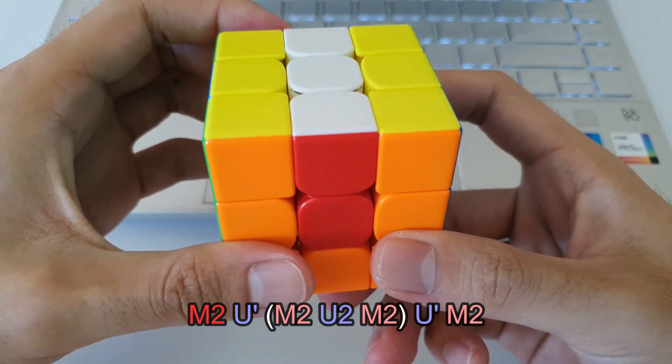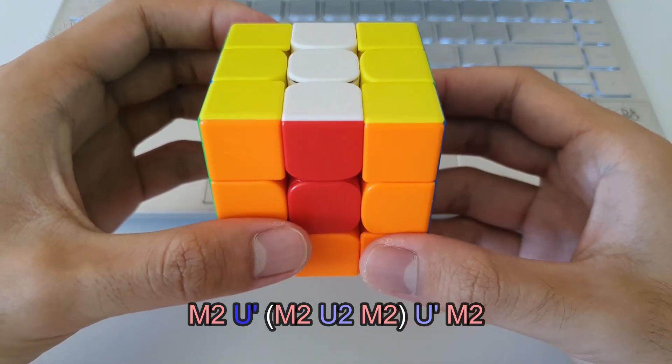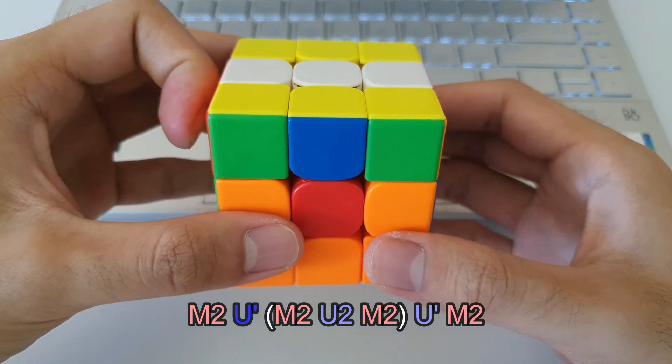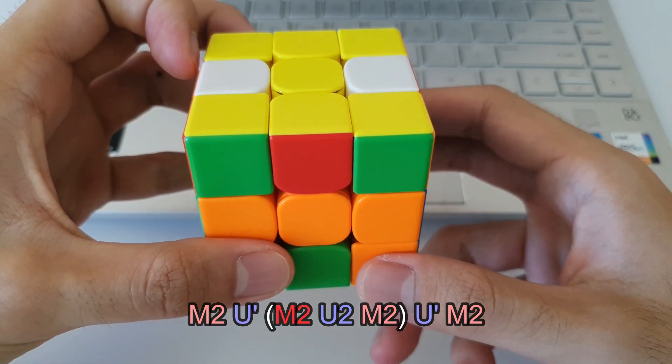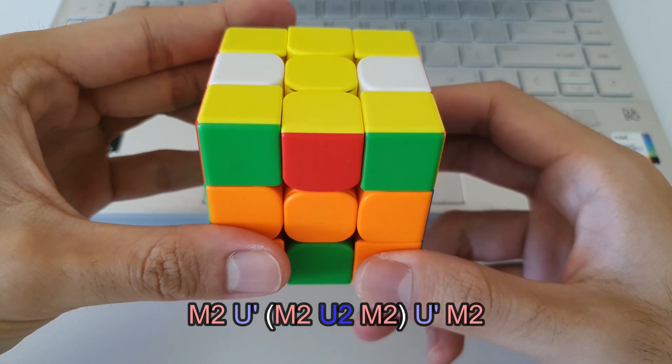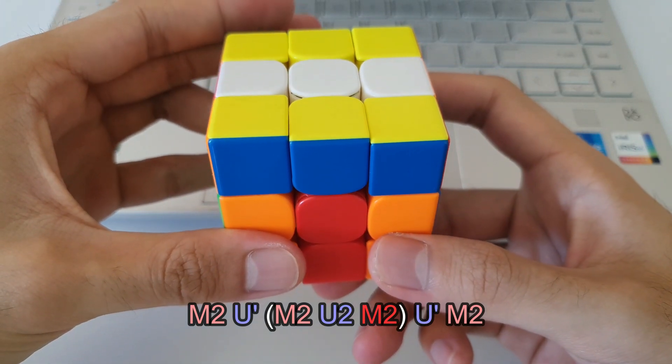And then here you could do U or U prime, I'll get to that in a second, but I usually do a U prime followed by another M2. So it's always an M2 if you do an M move. In the middle here we have a U2 followed by another M2.